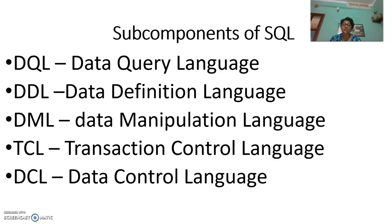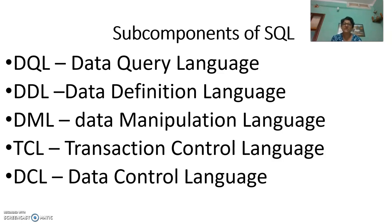We can save the data using commit. If I want to go back and not store the data — to undo the last record I stored — that is a rollback. There is also a savepoint, which we are going to discuss. Finally, we are going to talk about DCL, the Data Control Language, which allows us to create users, drop users, change passwords, and so on.